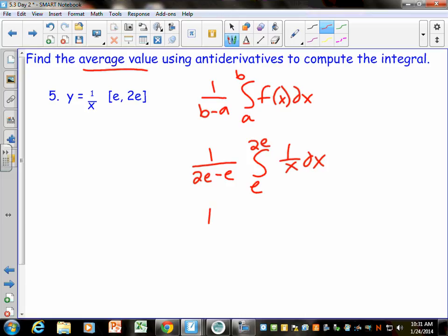So 2e minus e is 1 over e. And then what we learned yesterday is we're going to take the integral of this, or the antiderivative, and what is the antiderivative of 1 over x? ln of x, because the derivative of ln of x is 1 over x. So I would say that this is ln of x.